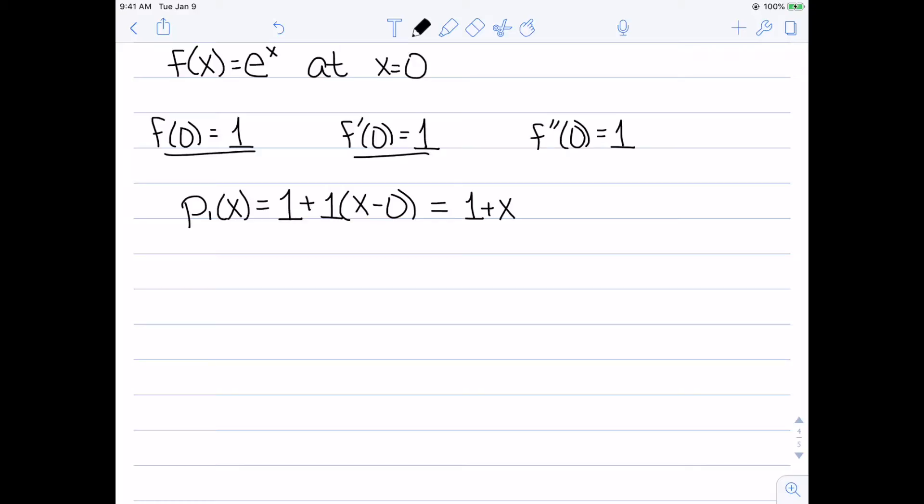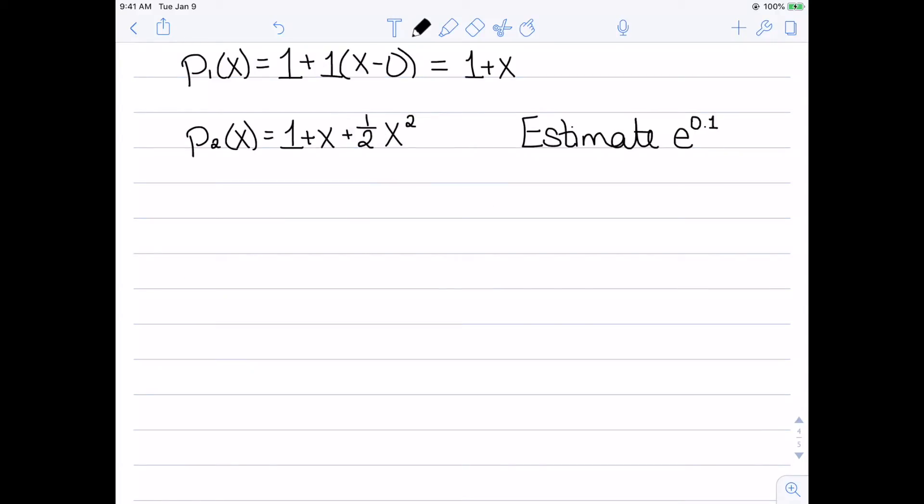Now let's do the quadratic. For the quadratic, we start with the linear approximation, and then we just add on the quadratic term, which said the second derivative divided by 2, so the second derivative is 1 divided by 2, times (x minus a) squared, so times (x minus 0) squared, or just x squared. So now I have both my linear and quadratic approximations.